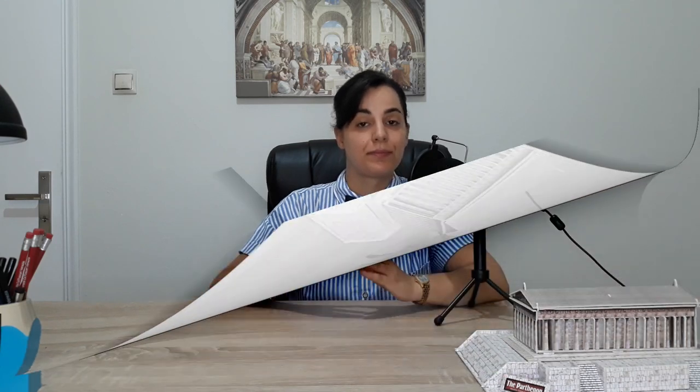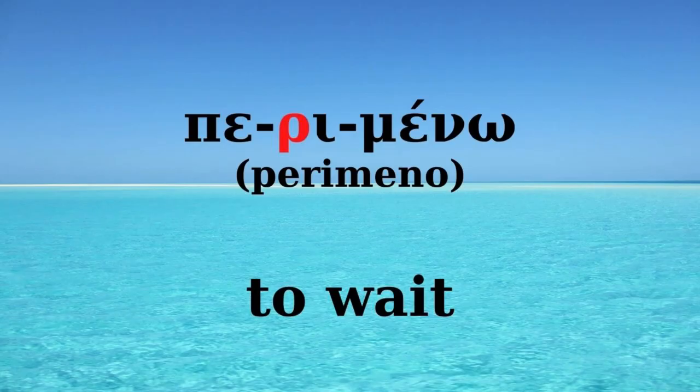The first rule: a consonant between two vowels is spelled together with the second vowel. For example, the word 'περιμένω' (to wait). In 'περι', the letter ρ is between two vowels, ε and ι, so the letter ρ goes with the second vowel.